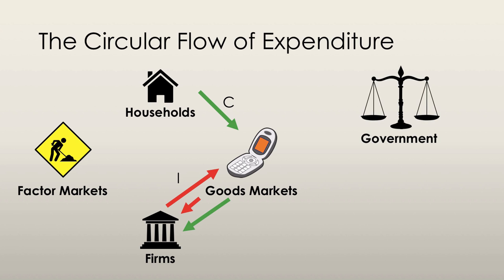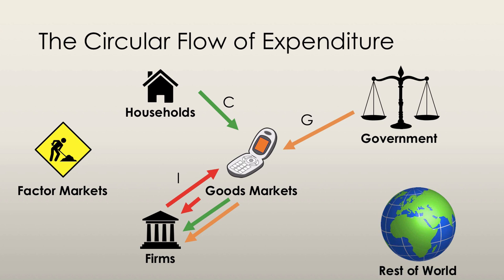There is a third institution: the government. The government also purchases goods and services in the form of government expenditure in the goods and services market, and that money goes to firms. We also have the rest of the world — the rest of the world purchases our exports, and we purchase the rest of the world's exports as Canadian imports. This is known as net exports, which is exports minus imports, and this money again goes directly to firms.